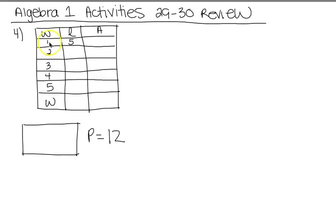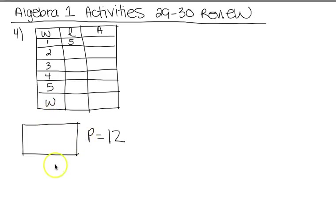If the width is 1, that means we have 1 on each side, a total of 2, which means there are 10 left to be divided between the two remaining sides. So that's how we get the length of 5.